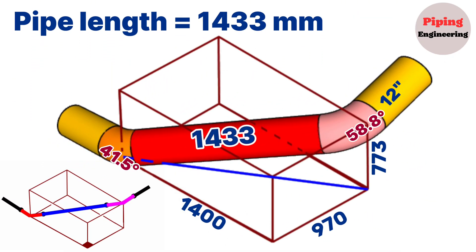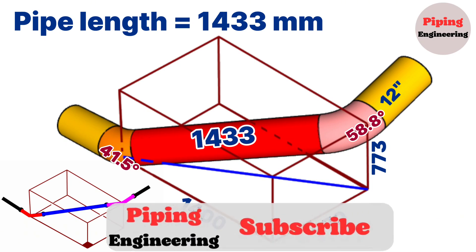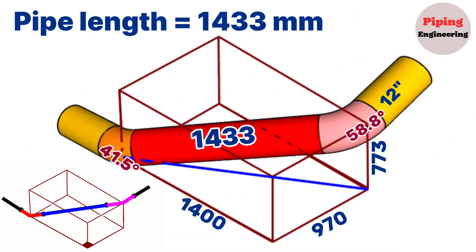By using this method, you can easily calculate pipe section lengths in any pipeline. This education video is finishing here. If you found this video useful, don't forget to subscribe to the channel and like the video. By becoming a member of our channel, you can support us and benefit from some features. If viewers write in the comments to improve their knowledge of pipe isometric drawings, we can send additional PDF files. Thank you for visiting the Piping Engineering YouTube channel.